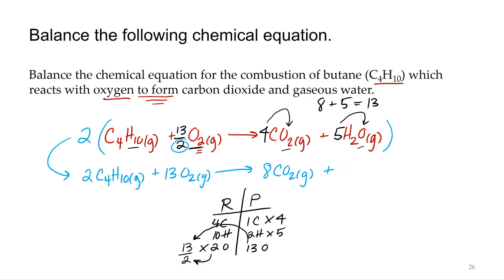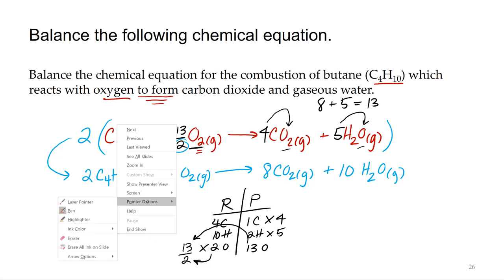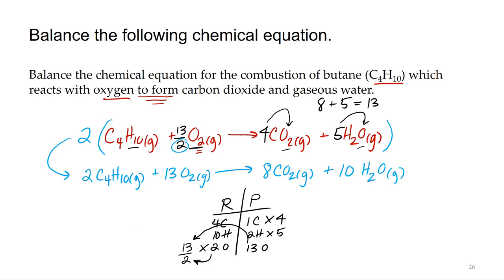Of course I'm going to still want to go through and make sure that this is balanced. So 2 times 4, I've got 8 carbons, 8 times 1 is 8, so 8 carbons. 2 times 10 is 20, 10 times 2 is 20, so 20 hydrogens on both sides.